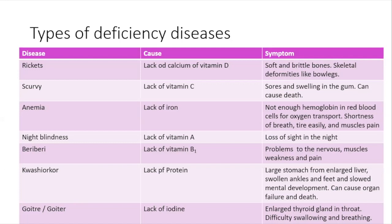We also have anemia. Anemia is caused by a lack of iron — not enough hemoglobin in red blood cells for oxygen transport. Symptoms include shortness of breath, tiring easily, and muscle pains. We know that iron is very important in order to make the protein hemoglobin, so when we don't take in enough iron we can't make hemoglobin in the way or amount we should, and oxygen isn't transported around the body the way we need it to be.